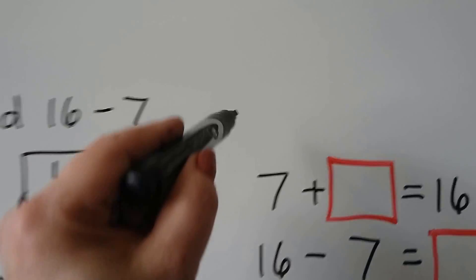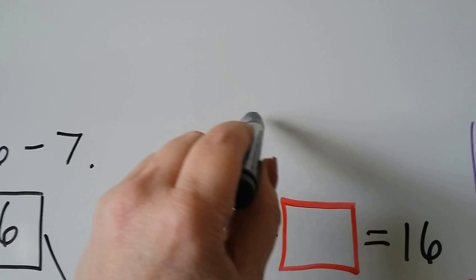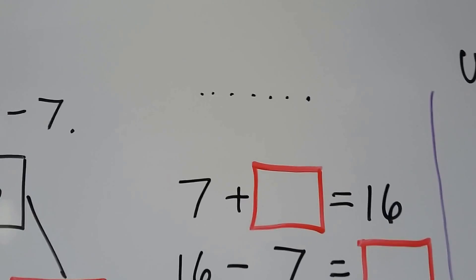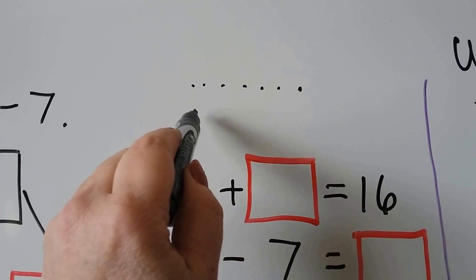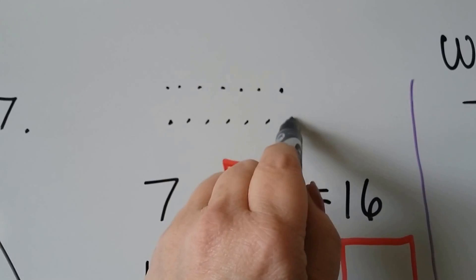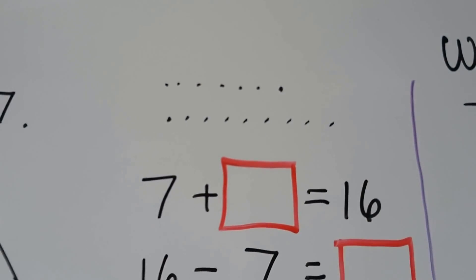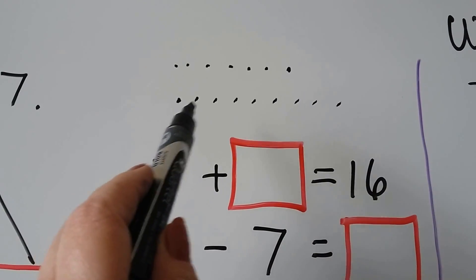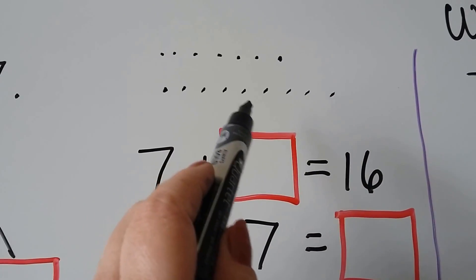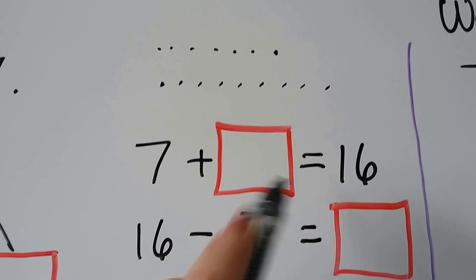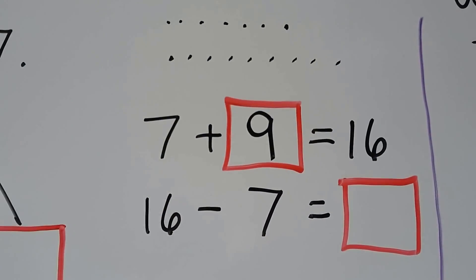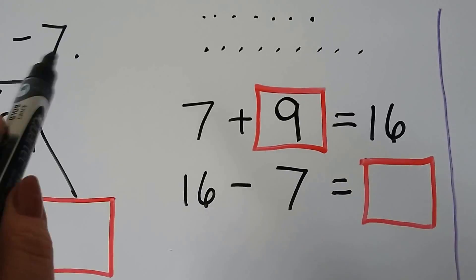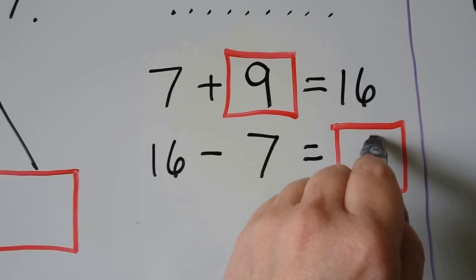Let's make 7 dots: 1, 2, 3, 4, 5, 6, 7. Then let's make more dots until we have 16: 7, 8, 9, 10, 11, 12, 13, 14, 15, 16. How many dots did we have to make? Here's our original 7. We had to do 1, 2, 3, 4, 5, 6, 7, 8, 9. So 7 plus 9 is equal to 16. That means 16 minus 7 is equal to 9.